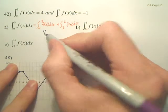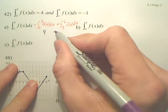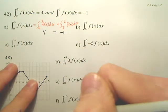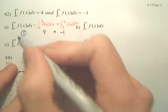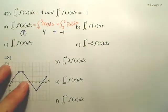It's 4. What's this? Negative 1. So my answer is 3. The area from 0 to 6 is 3.